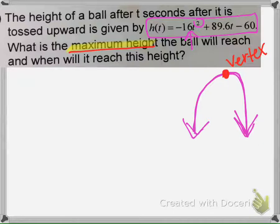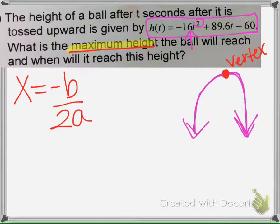We could either complete the square to find the vertex or use the vertex formula, x = -b/(2a). For this video, I'll use the vertex formula.